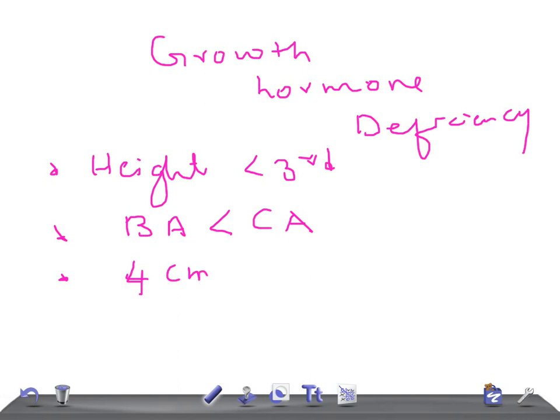Fourth, there should be an abnormal 24-hour growth hormone secretory pattern. Fifth, peak growth hormone levels should be less than 10 nanograms per ml during provocative stimulation testing.